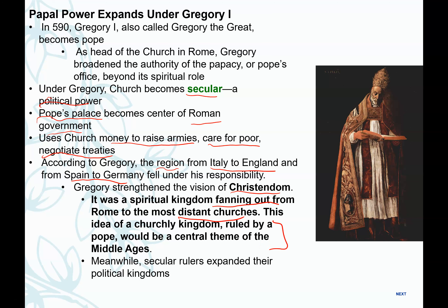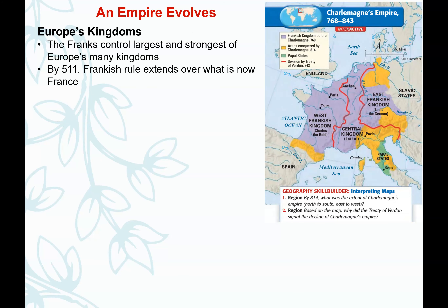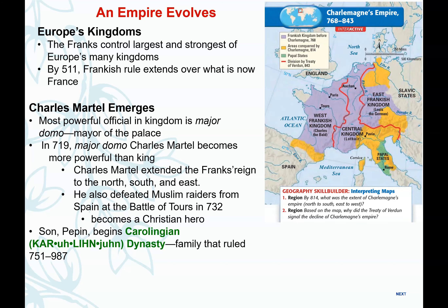This highlights the central theme of the Middle Ages: the conflict between Christianity and secular political power. The Middle Ages revolved around Christianity and the battle between the church and the state, as secular leaders — kings — were also trying to increase their political power. The Franks controlled the largest and strongest of Europe's kingdoms and expanded into parts of France.